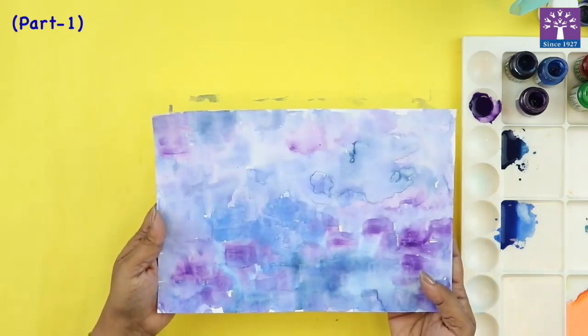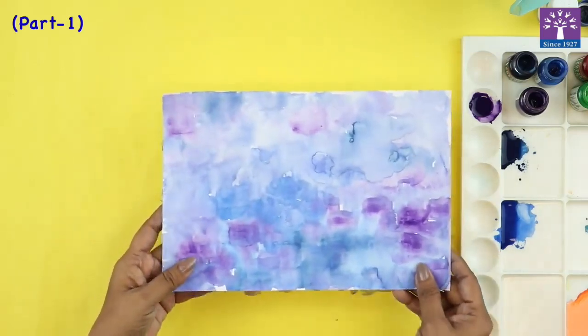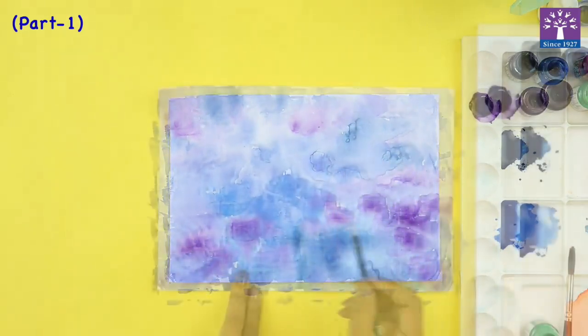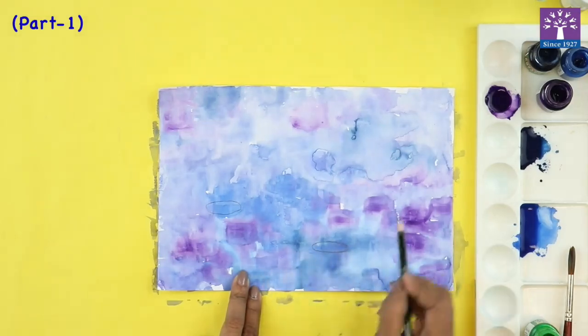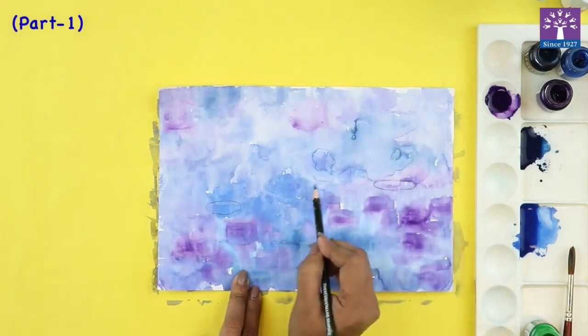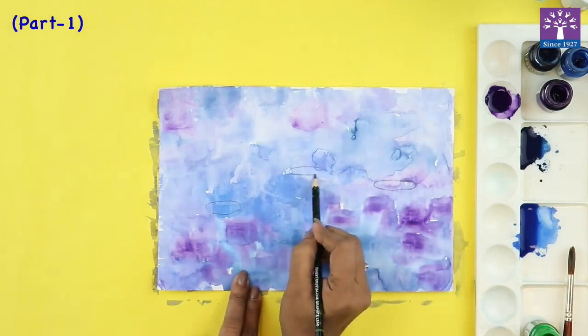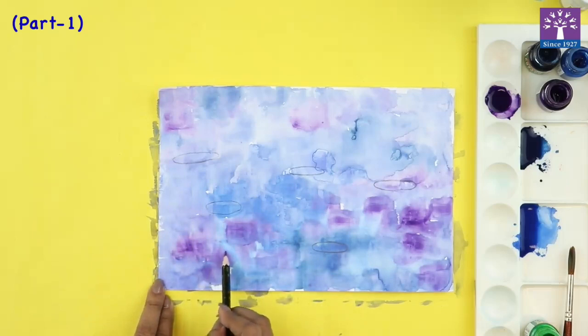Our paper has dried and it is giving that very soft watery look. This effect is very nice. So just randomly draw these oval shapes on the paper. These are going to be our water lily leaves. They are very similar to the lotus leaves.